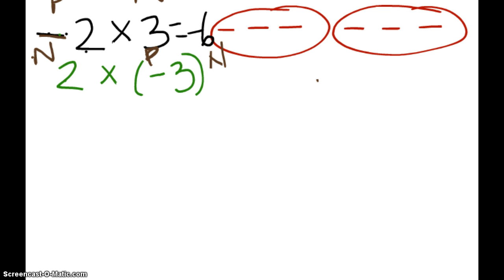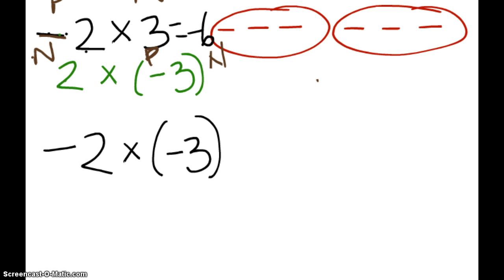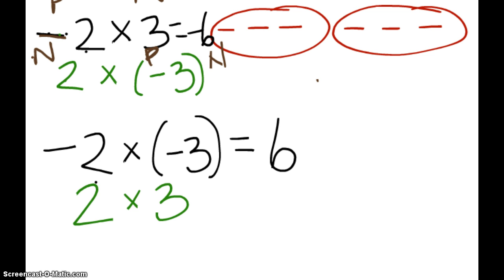What if I had negative 2 times negative 3? What does that mean — negative 2 groups of negative 3? I can't have negative 2 groups of anything, so we're going to do the opposite. Instead of negative 2 groups, we're going to have 2 groups of the opposite of negative 3 — so 2 groups of 3. And 2 groups of 3 is 6. So a negative times a negative gives you a positive.